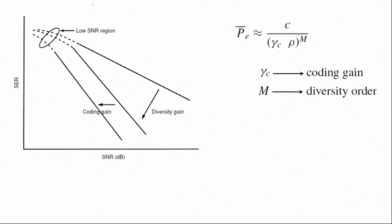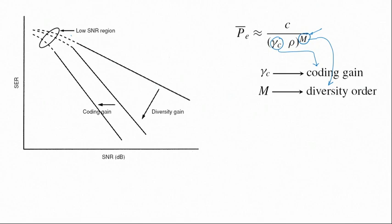In the probability of error expression, the exponent of SNR implies the diversity gain and the multiplicative factor implies the coding gain. As m increases, the slope of the error probability curve becomes steeper and steeper, and as the coding gain increases the curve shifts more to the left, indicating that at lower SNR one can achieve a better probability of error.